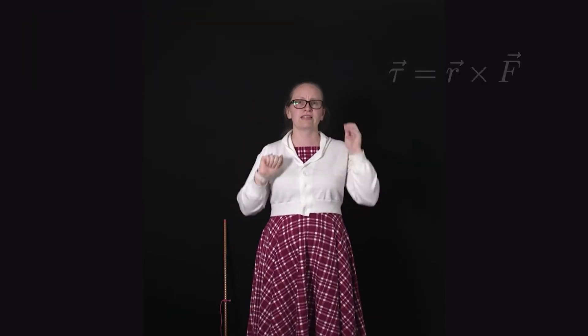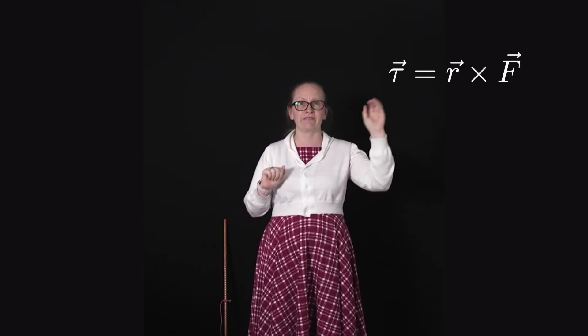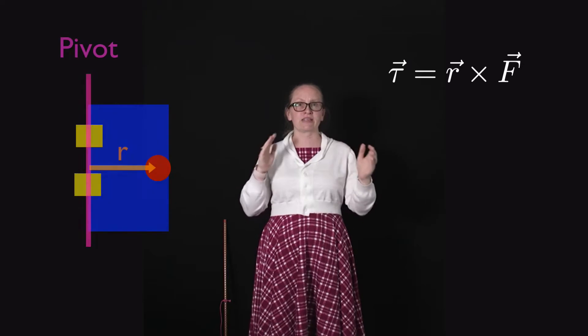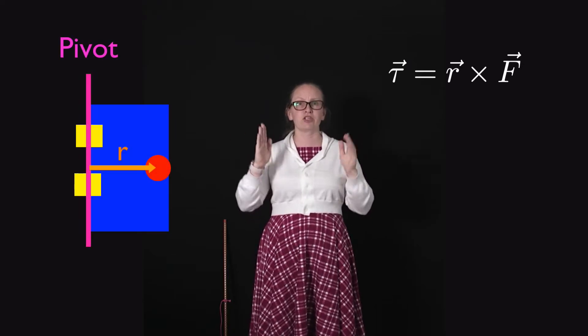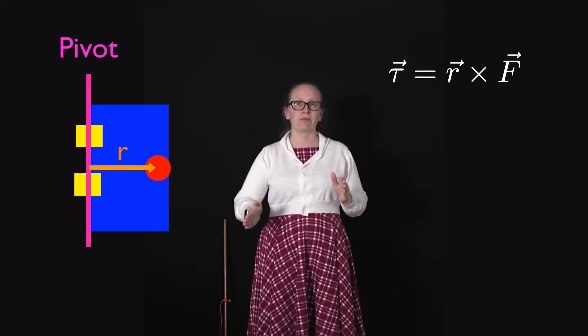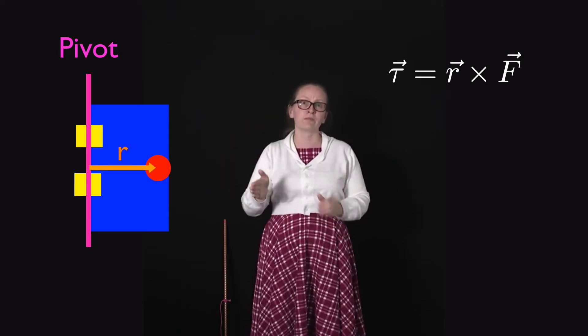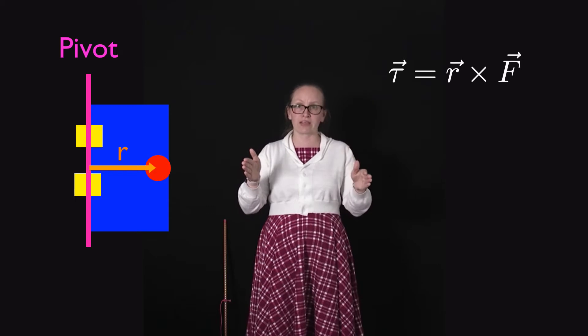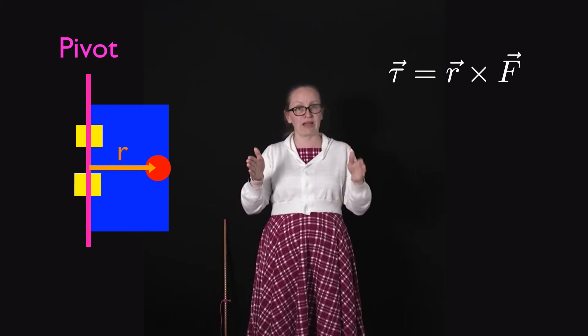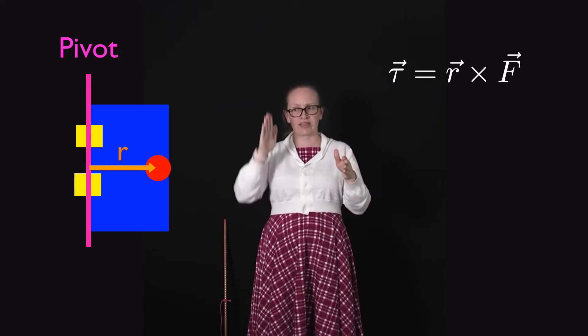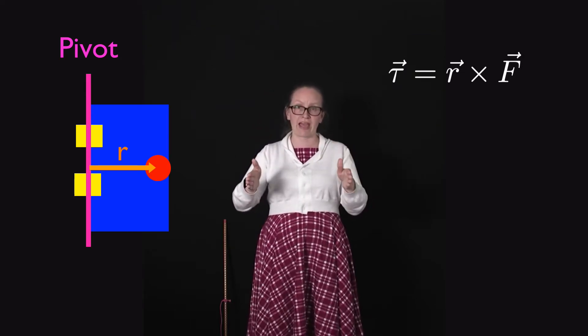Formally, how we write down an equation to describe the torque is that the torque is equal to r cross F. In this vector equation, r represents the radius vector which goes from the pivot point to the point where the force is applied. For our door, the force is applied on the handle, so the r vector is equal to the length from the pivot point to the handle.